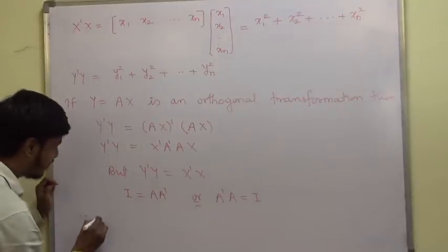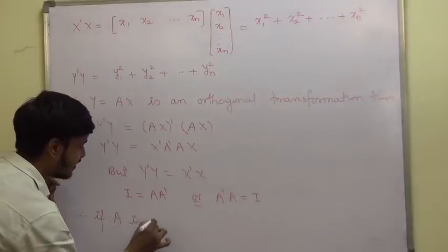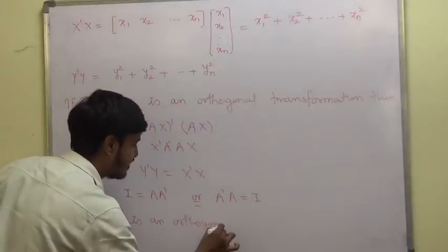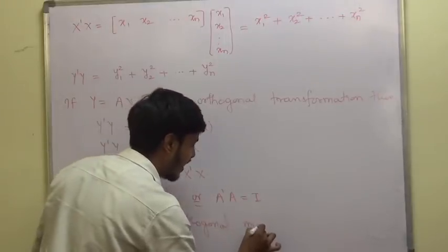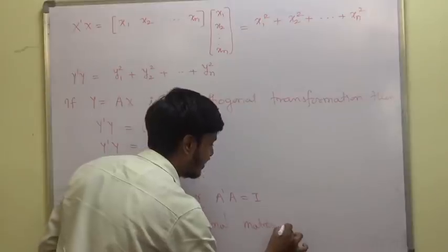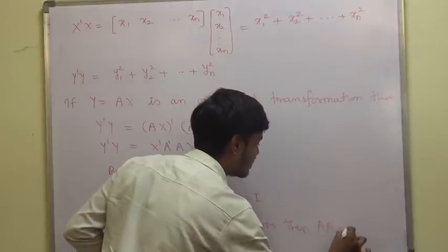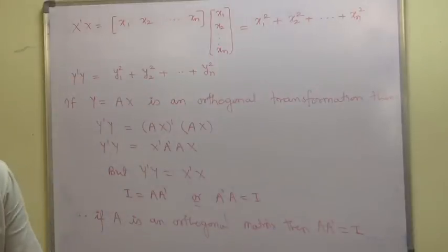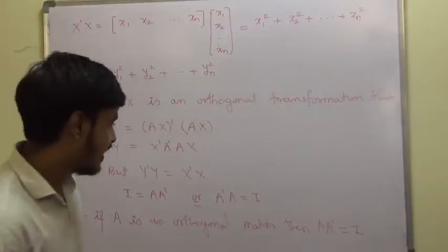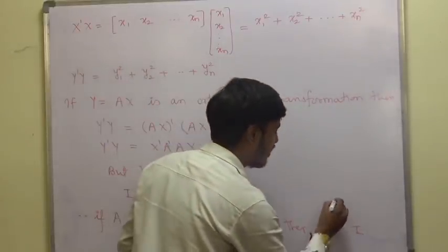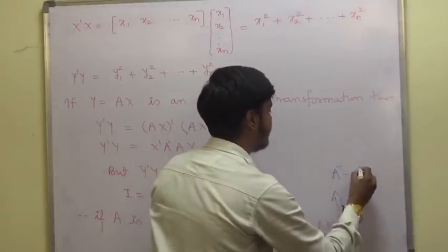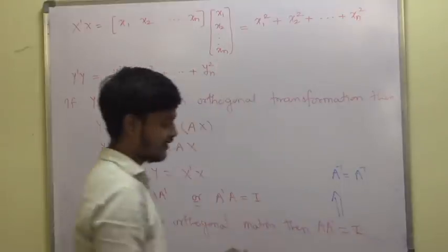Therefore, if A is an orthogonal matrix, then A · A^T = I, which implies A^(-1) = A^T.